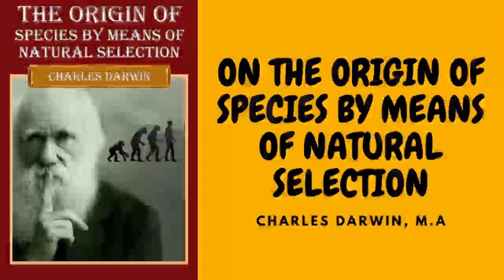Moreover, I do not believe that any ornithologist would place the English carrier, the short-faced tumbler, the runt, the barb, the pouter, and fantail in the same genus — more especially as in each of these breeds several truly inherited sub-breeds or species, as he might have called them, could be shown him. Great as the differences are between the breeds of pigeons, I am fully convinced that the common opinion of naturalists is correct, namely that all have descended from the rock pigeon, Columba livia, including under this term several geographical races or subspecies which differ from each other in the most trifling respects.